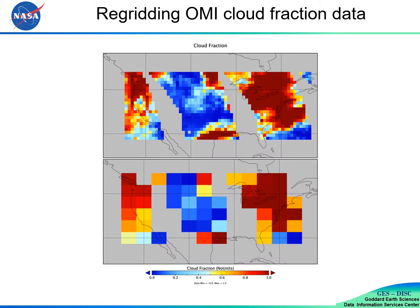Why do we need to re-grid? Re-gridding allows users to compare data from different missions, i.e., different grid resolutions. L34RS now provides seven different interpolation methods and 33 different grids.